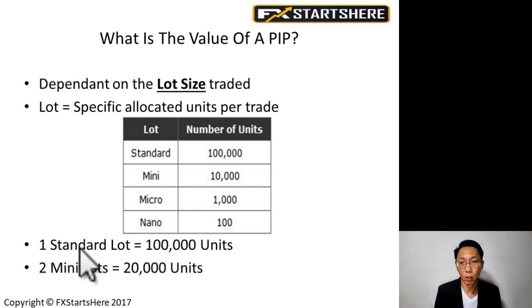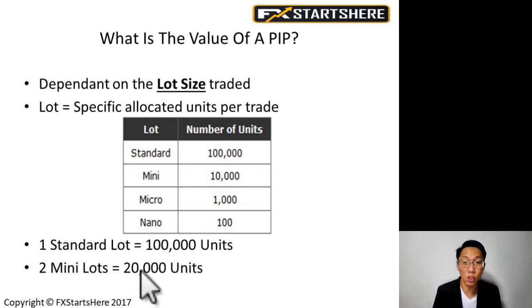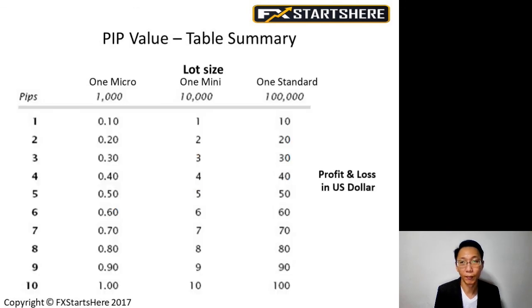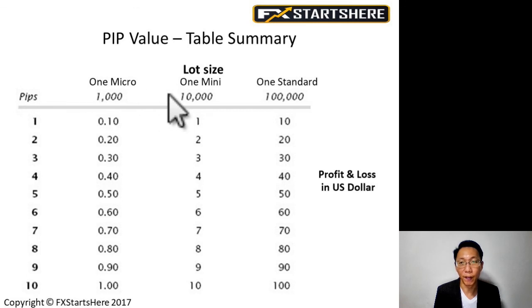To clarify lot size calculations: one standard lot is 100,000 units. Two mini lots equals 20,000 units. Seven micro lots equals 7,000 units. Now let's look at the actual PIP value depending on lot size.